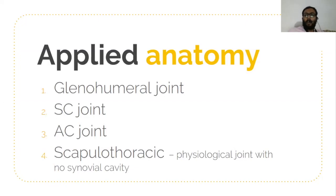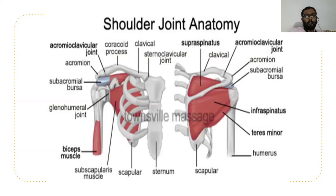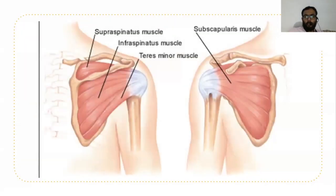In this picture you can see the sternoclavicular joint, acromioclavicular joint, acromion process, subacromial bursa, glenohumeral joint, supraspinatus muscle, and biceps. From behind, you can see supraspinatus, infraspinatus, and teres minor. The rotator cuff — or musculotendinous cuff — includes four muscles: supraspinatus, infraspinatus, teres minor, and subscapularis. The subscapularis muscle is attached anteriorly and facilitates medial rotation of the shoulder joint.